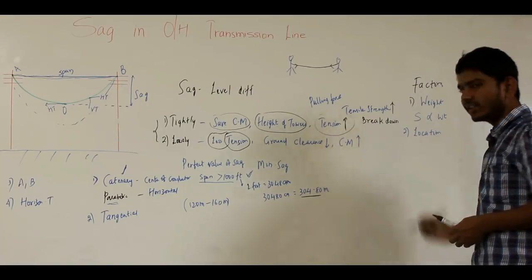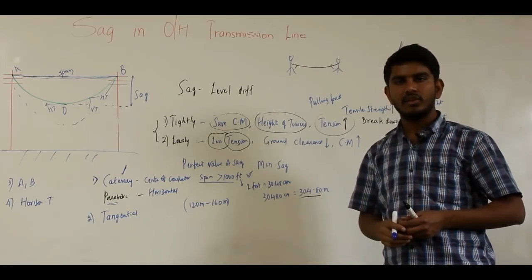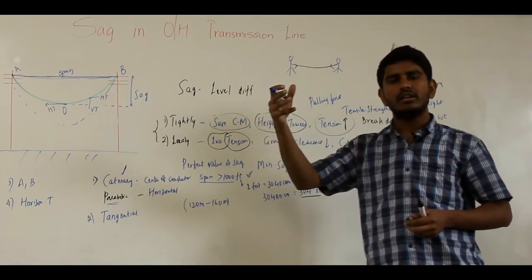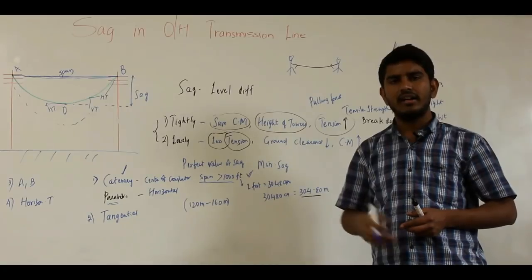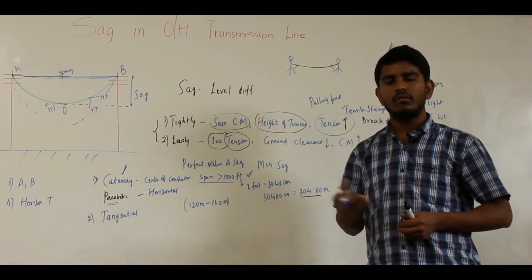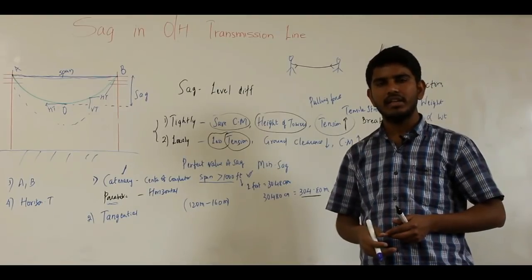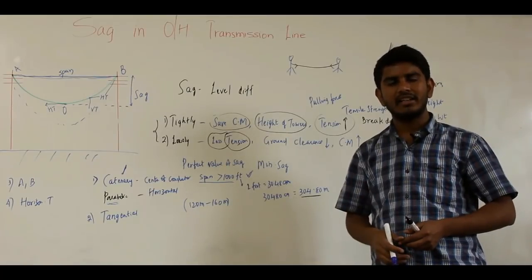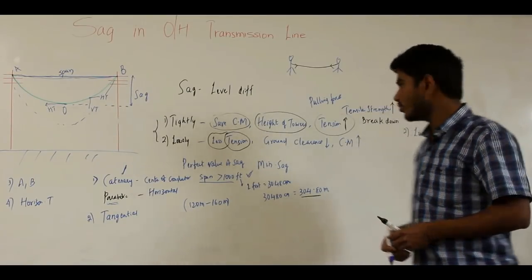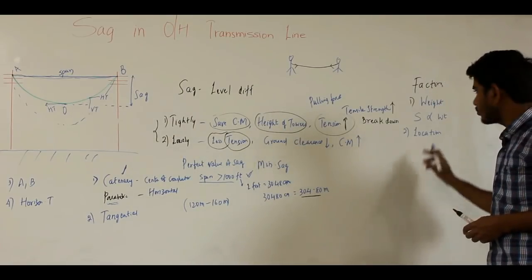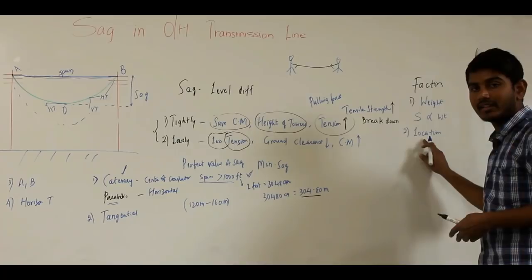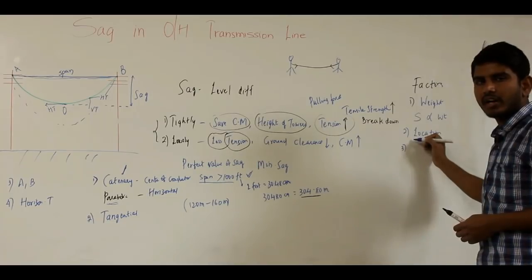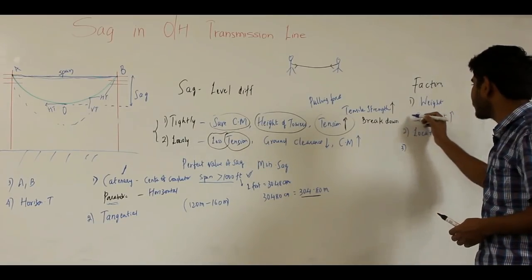The location of the conductor also affects sag. In areas where ice formation occurs — such as Canada, Alaska, and Russia — there is accumulation of ice around the conductor due to snowfall and frost. This accumulation increases the weight of the conductor, and as the weight increases, the sag also increases.